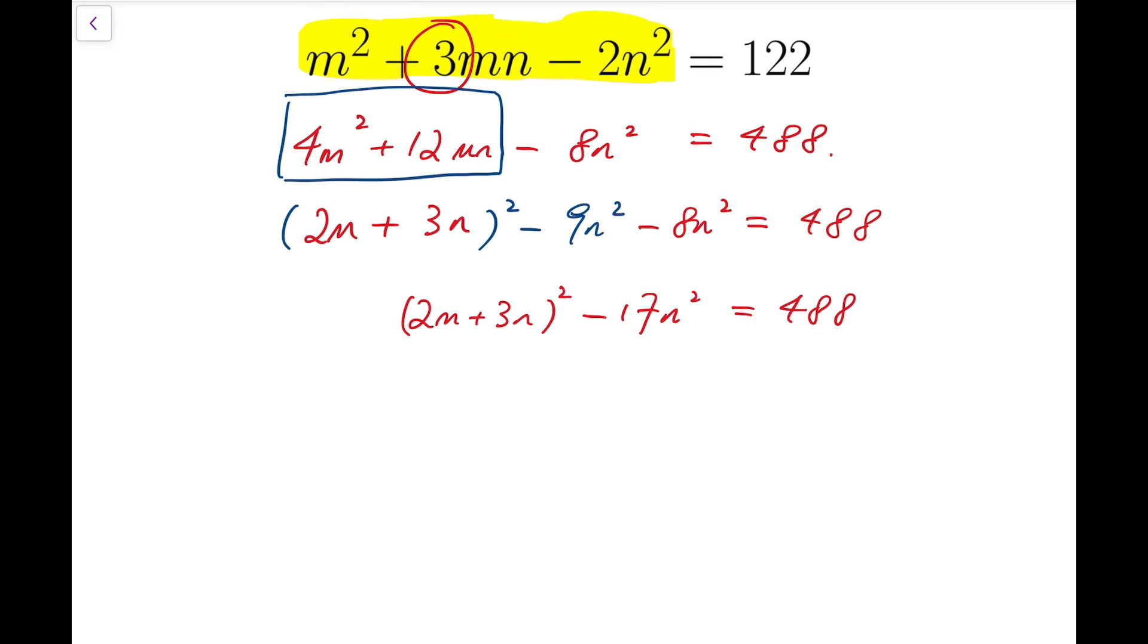I will keep going. I need some more information about m and n, so I'm going to take mod 17 on both sides, because this is kind of an obstacle for me to do some kind of work on factorization, so I'm going to take mod 17 on both sides, so that the 17n squared term can vanish.